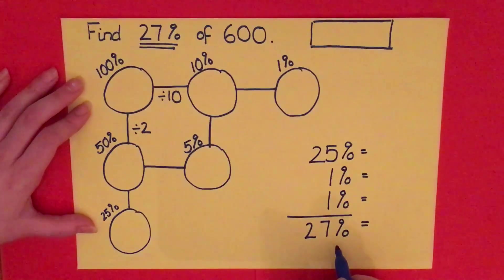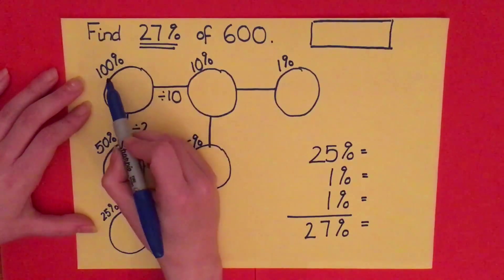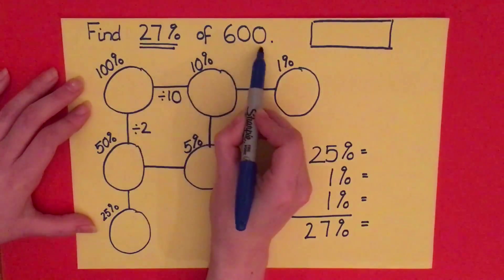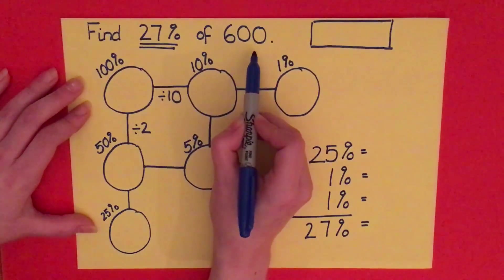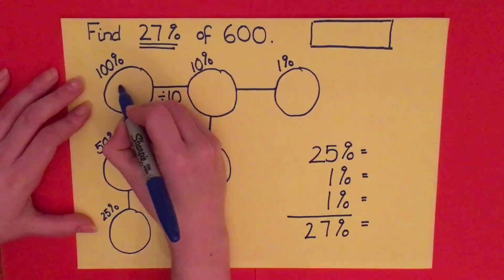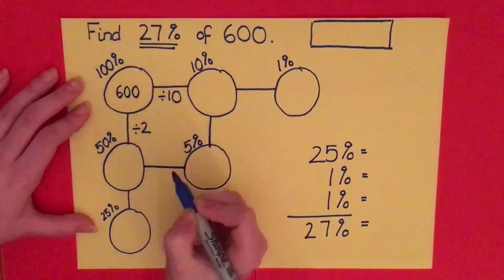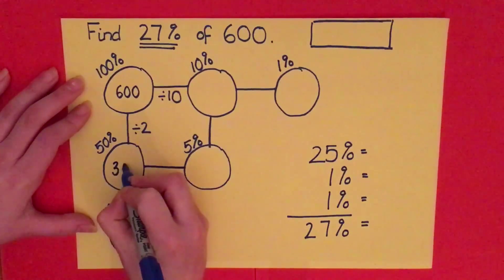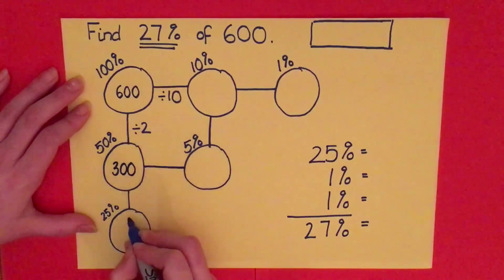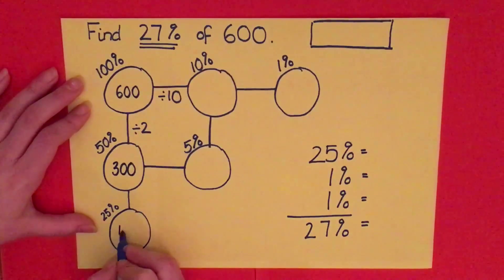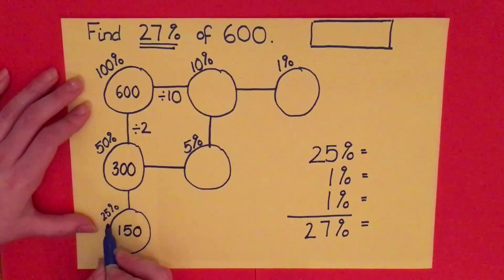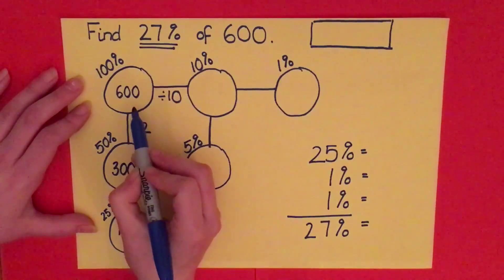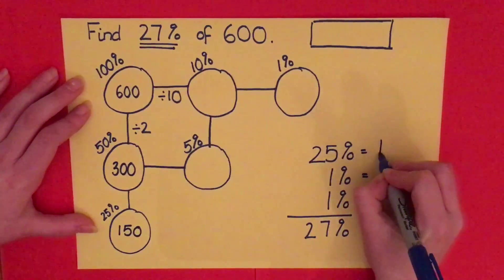Let's put some numbers into the bubbles. The 100% bubble is the whole number you're given, so 600 goes in there. To get down to the 25% bubble, I halve 600 to get 300, then halve again to get 150. So 25% of 600 is 150, and I'll put that value next to the 25% bubble.